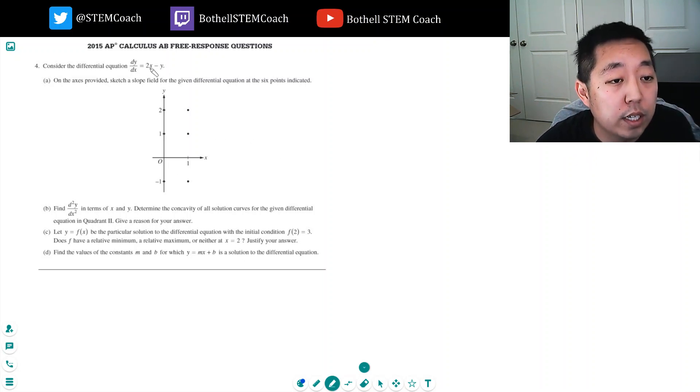So dy/dx equals 2x minus y. So this point x is 0 and negative y minus negative 1, that's positive 1, so positive 1 looks like that. 0, 1, slope is negative. 0 minus 2 is negative 2, it's a little bit steeper like that. And then at 1, 2, it's 2 minus 2, so that's 0. 1, 1, it's 2 minus 1, that's positive 1. And then 1 negative 1, that's 2 minus a negative 1, that's 3, so it's even steeper like that.